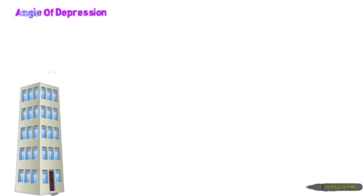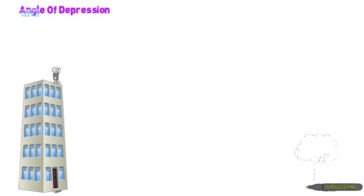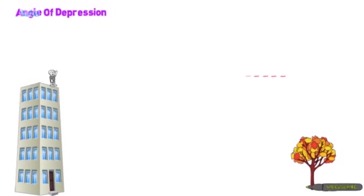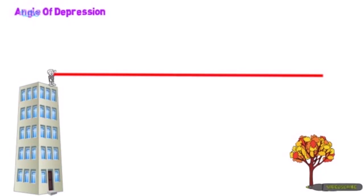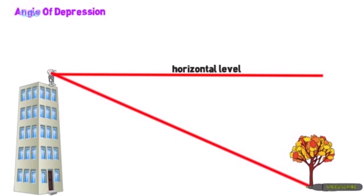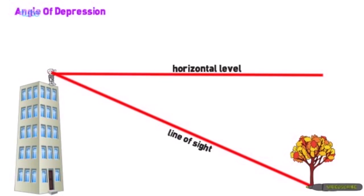Now let's see what do you mean by angle of depression. Consider a building, and on the top of the building a boy is standing — this will be his horizontal level. The boy is looking at the base of the tree, so that imaginary line is called line of sight.